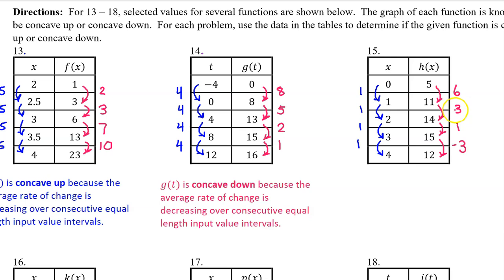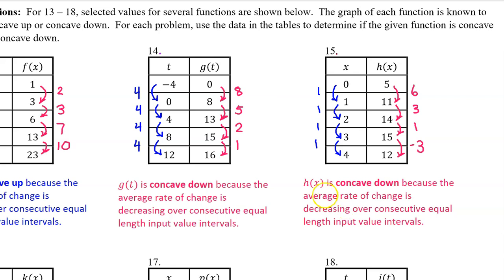For number 15, these are the output value changes and the input value changes. Since we have consecutive equal length input value intervals, we don't have to calculate the rate of change to see that it is decreasing. Therefore, h of x is concave down. H of x is concave down because the average rate of change is decreasing over consecutive equal length input value intervals.